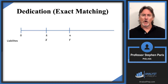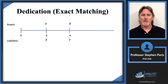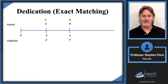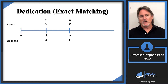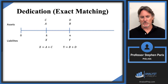The idea behind exact matching is to purchase assets that are going to pay at the exact same times as the liabilities. In most problems you'll have a couple of different types of assets. You set up a system of equations where you add up the total amount of assets you have at each time and set that equal to the corresponding liability at each time. It's a fairly simple idea.